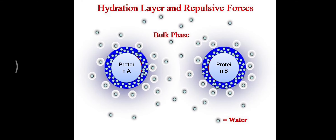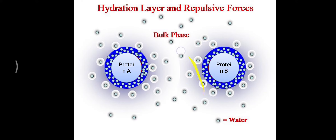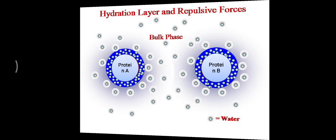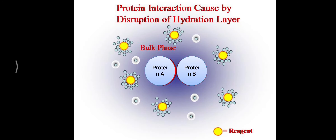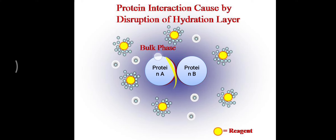When a protein molecule is present in solution, it has a shell of hydration because of the polar groups present in the protein. This shell of hydration makes the molecule solubilize in water and also creates repulsive forces that keep different protein molecules separated. But when any reagent is added to the solution, it breaks down this shell of hydration, causing the proteins to precipitate and aggregate with surrounding molecules.